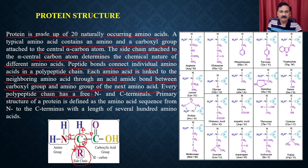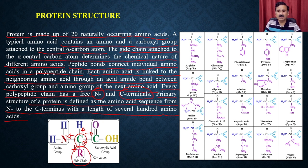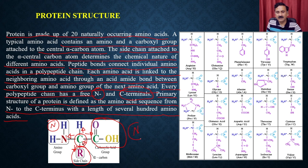Every polypeptide chain has the free amino group and the free C-terminal groups. That is why the primary structure of a protein is defined as the amino acid sequence from the N-terminus to the C-terminus, with a length of several hundred amino acids. The protein starts with the N-terminus, and with the last amino acid it has a free carboxyl group. So the protein has two ends: one is the N-terminus and the other is called the C-terminus.